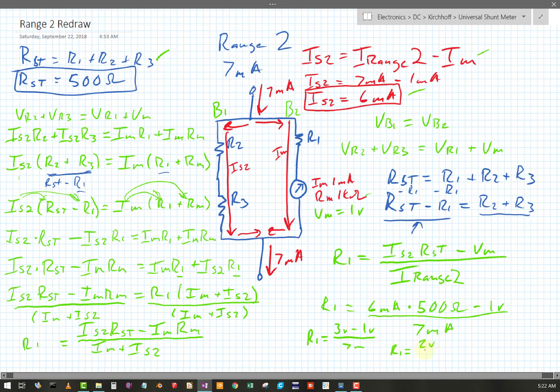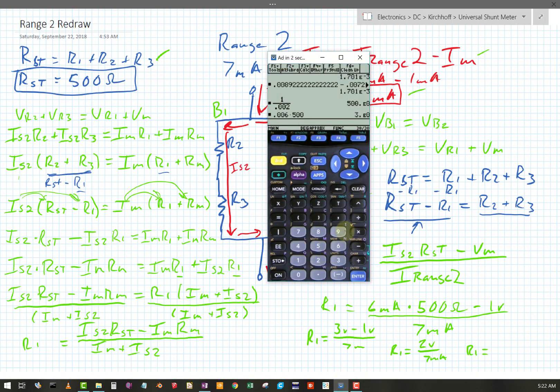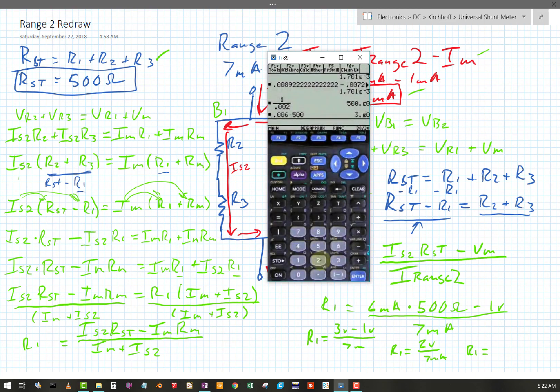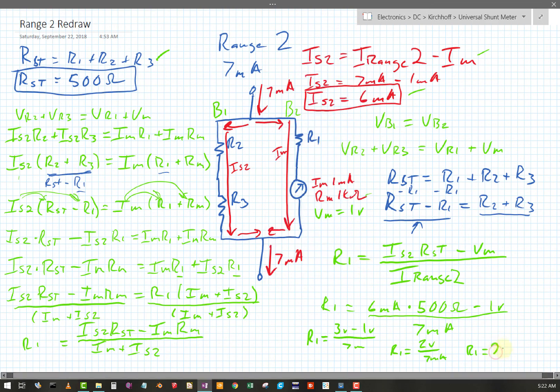Okay, so R1 equals, let's bring the calculator back. Okay, so 3 minus 2, or 3 minus 1 is 2. So, oh boy. 2 divided by 7 e to the negative third gives me an R1 of 285.7. 285.7 ohms for R1. Okay, so we're going to want to remember that number.